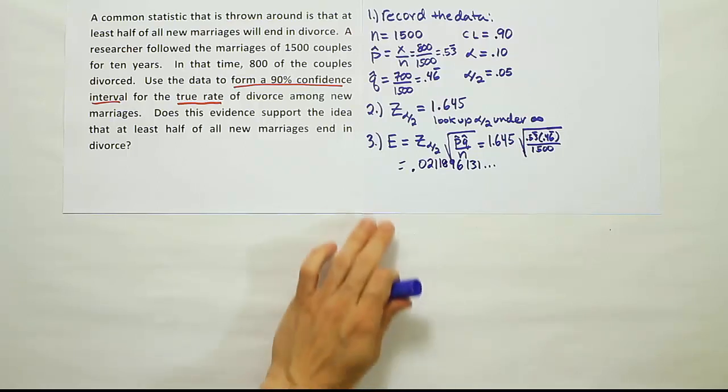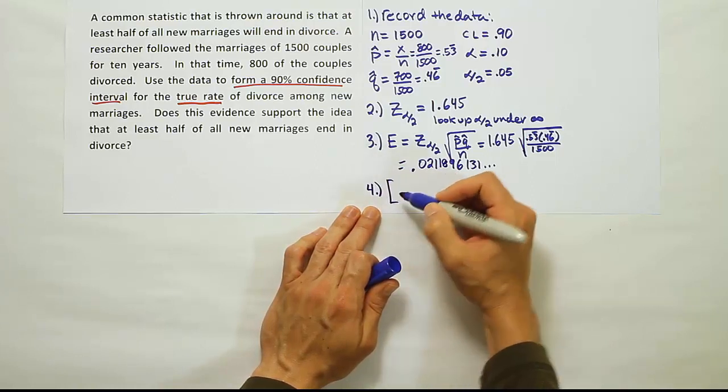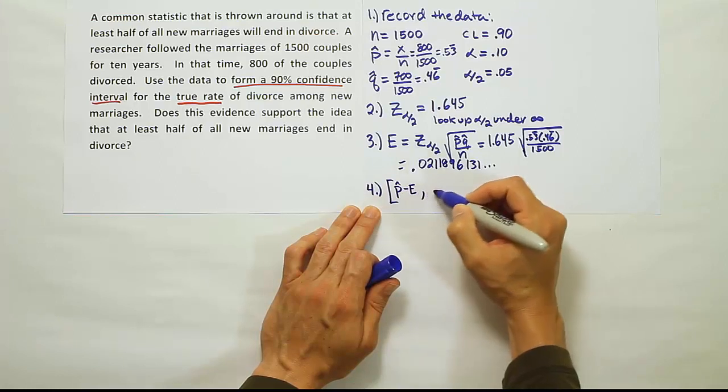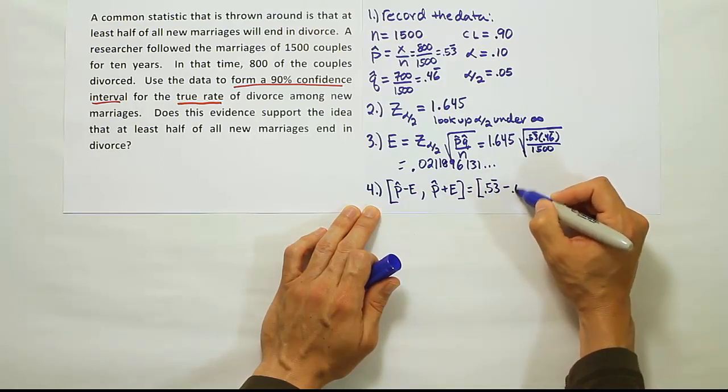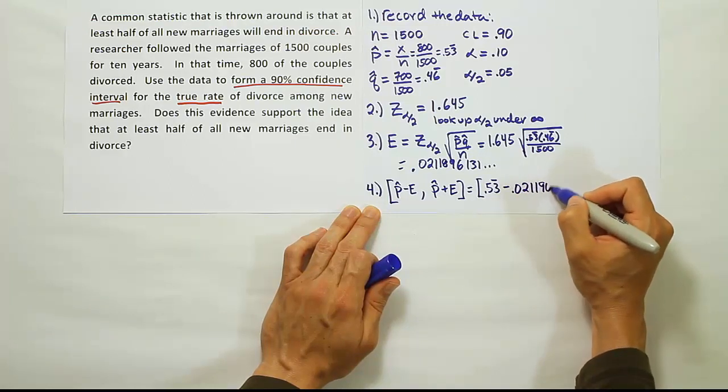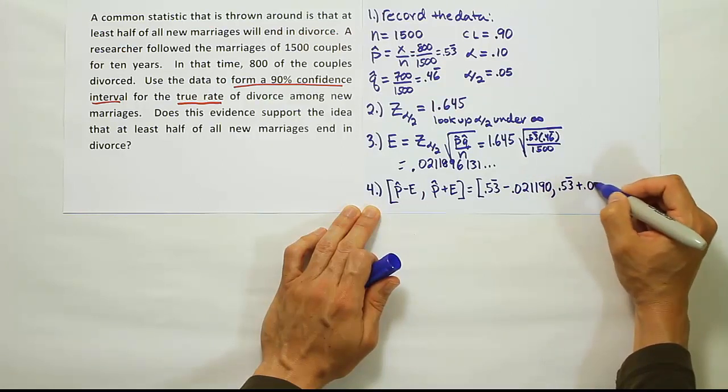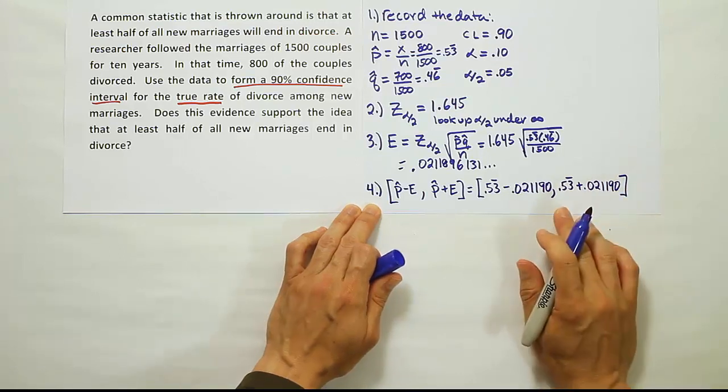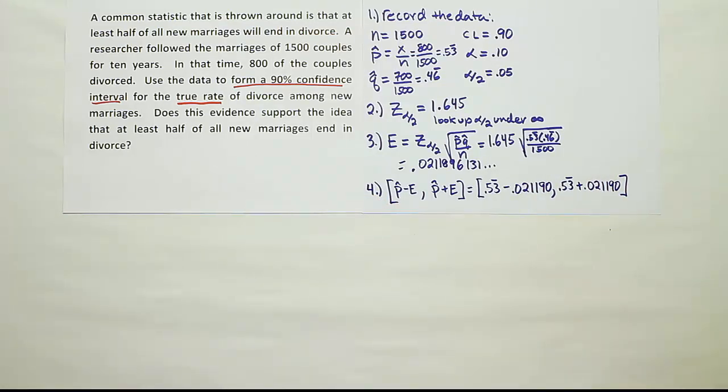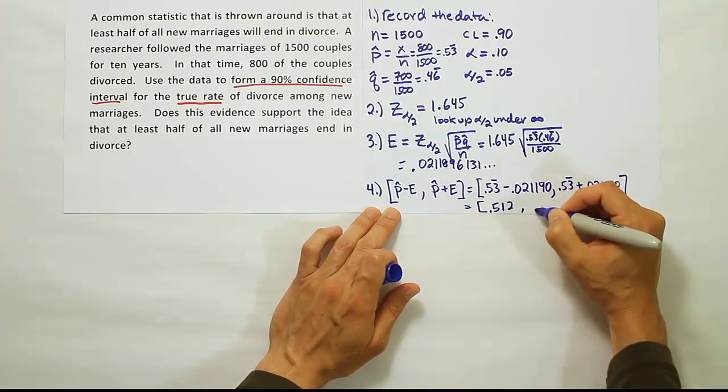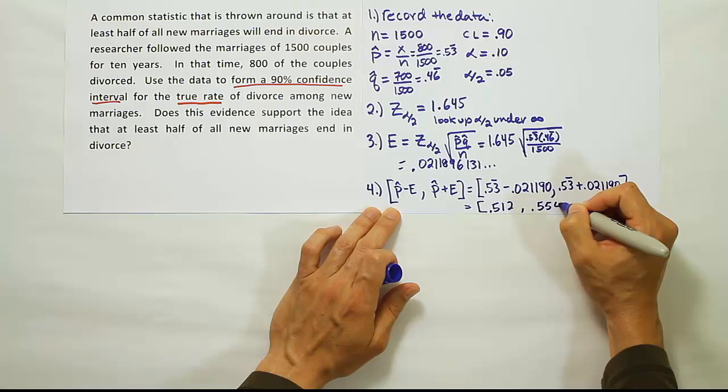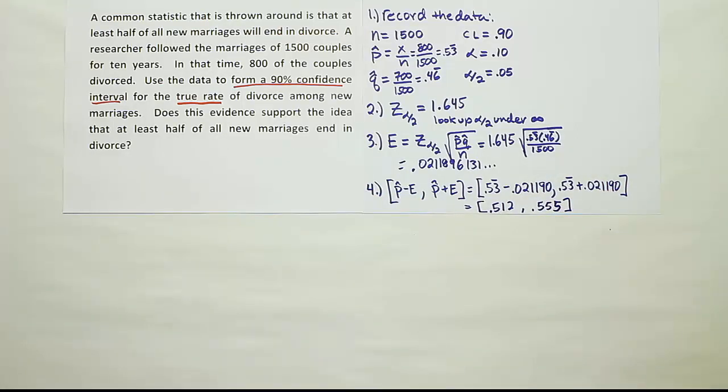Now from there, what you want to do with that decimal answer is to plug it into your fourth and final step, which is going to be p-hat minus the error, p-hat plus the error. So in this case, that's going to be 0.53 repeating minus 0.02119. We'll have 0.53 repeating minus our error and then plus our error. When you're done with that, you get 0.512 up to 0.555 when rounded off to three decimal places.